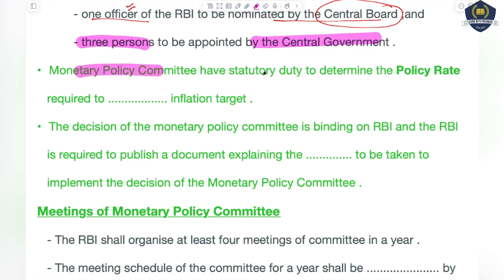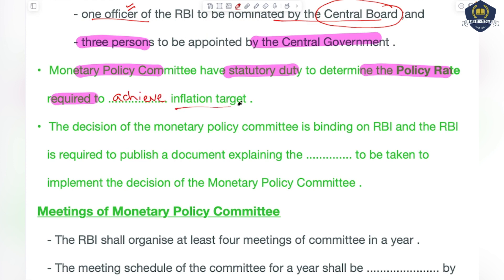The Monetary Policy Committee has a statutory duty. What is that duty? The committee is majorly framed to determine the policy rate required to achieve the inflation target. The inflation target that has been set — achieving and attaining that target — is the duty of the Monetary Policy Committee.